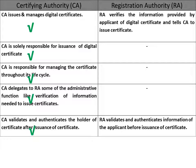CA delegates to RA some of the administrative functions like verification of information needed to issue the certificate. CA validates and authenticates the holder of the certificate after issuance, whereas RA validates and authenticates the information of the applicant before issuance of the certificate.